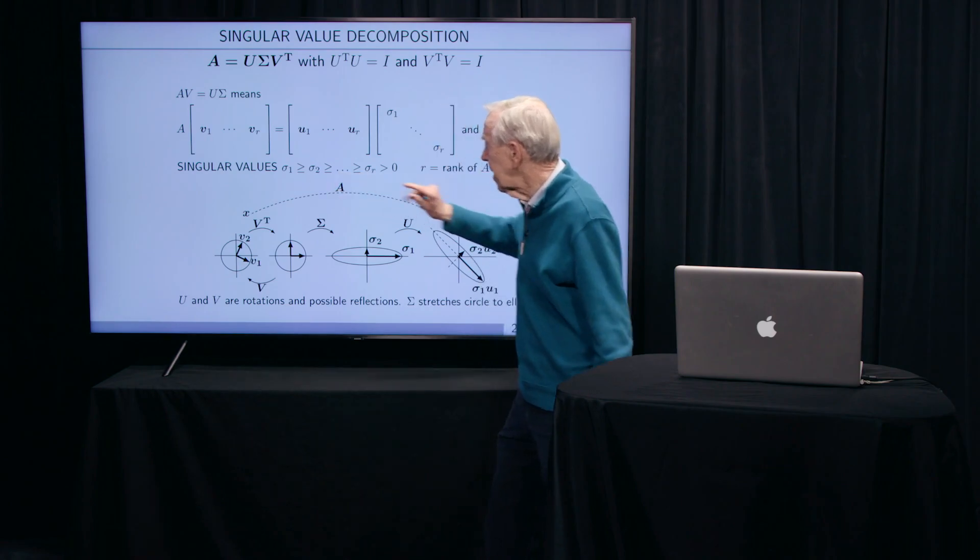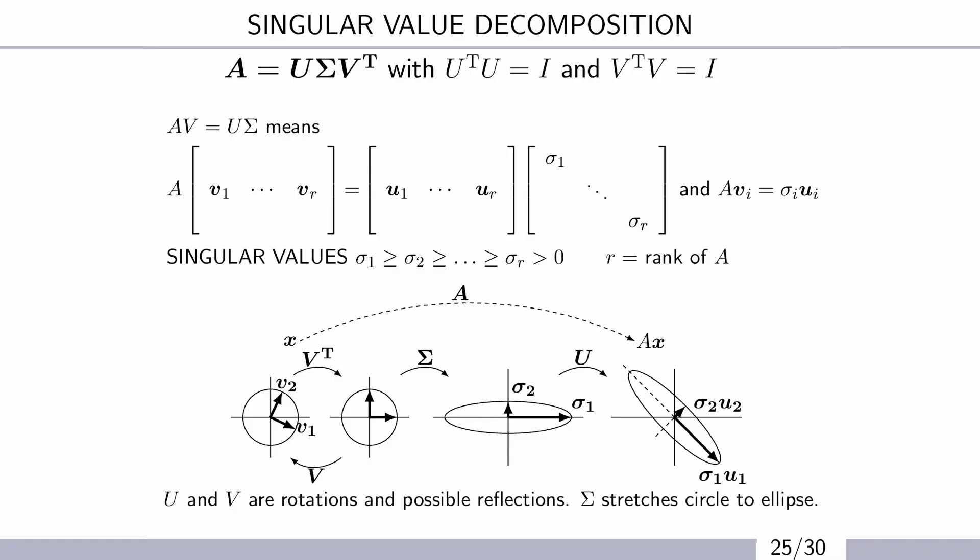And these numbers, instead of the lambdas, are called singular values. And we use the letter sigma for those. And here is a picture of the geometry in 2 by 2, if we had a 2 by 2 matrix.